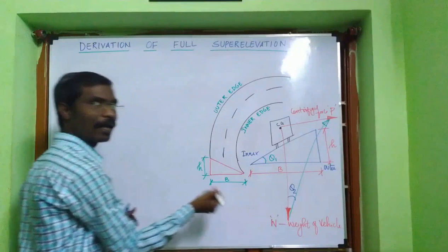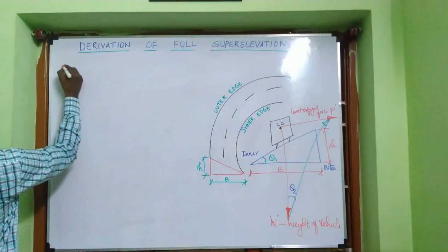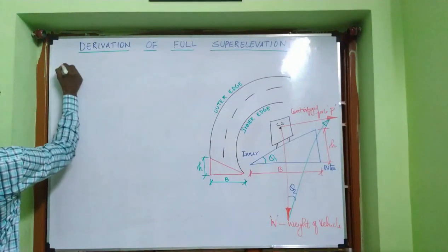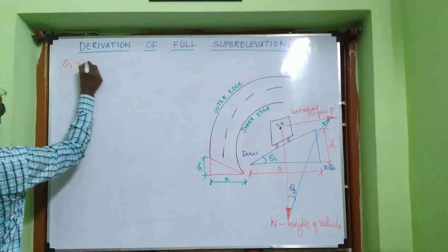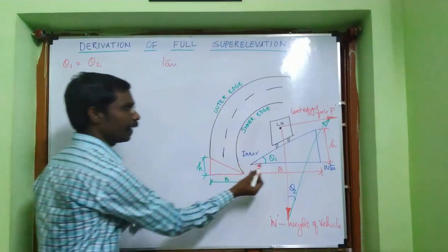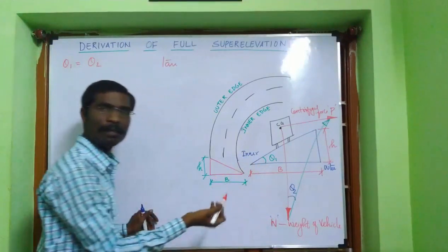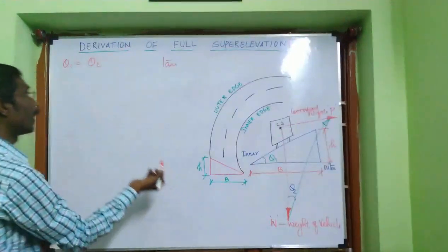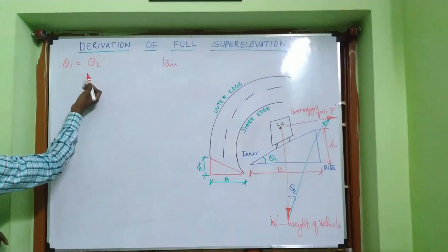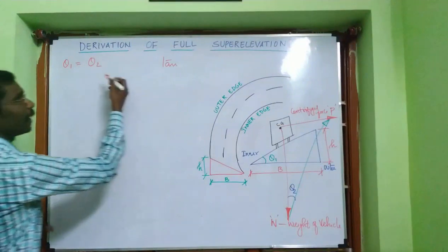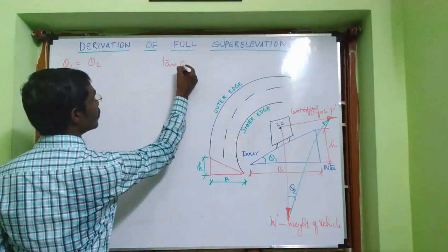Considering theta 1 and theta 2, both angles are similar, so we can write theta 1 is equal to theta 2. Therefore, tan theta 1 is equal to tan theta 2.